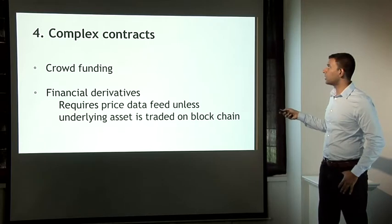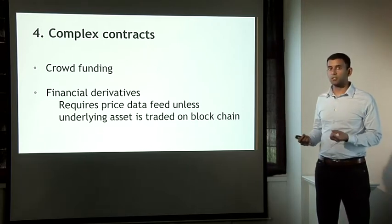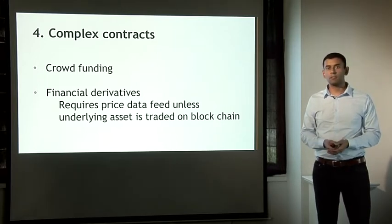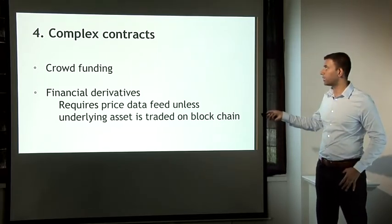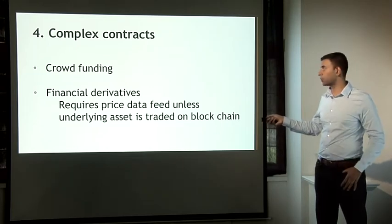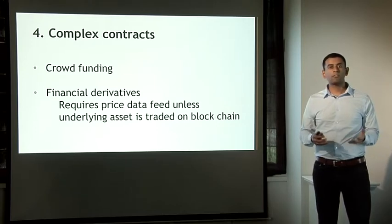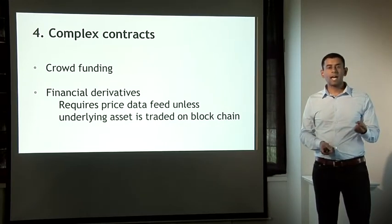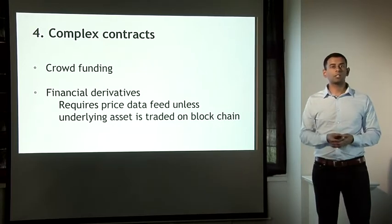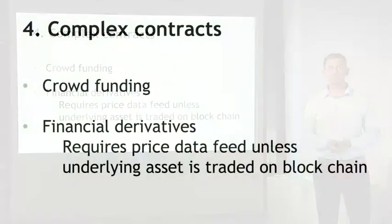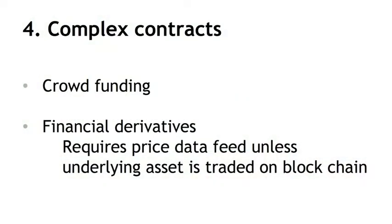The fourth category is more complex contracts. Trade can be thought of as a very simple contract — you give me this object in exchange for money — but you can have more complex contracts like crowdfunding. There are also financial derivatives, which is another big area of excitement. Derivatives have an underlying asset, and the value of the derivative depends in some way on the price movements of that underlying asset.